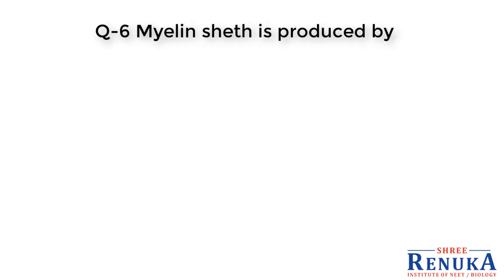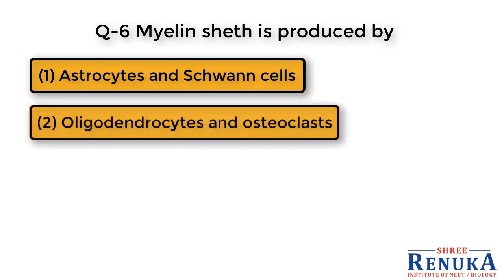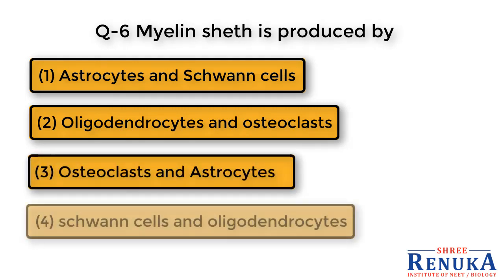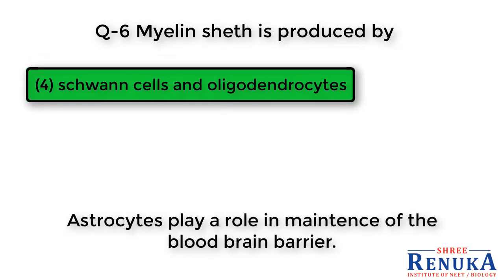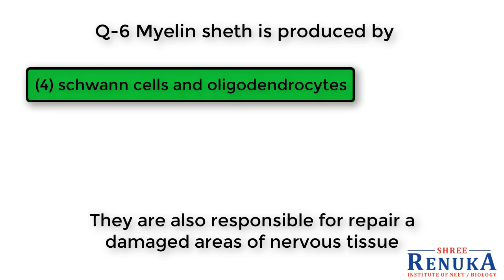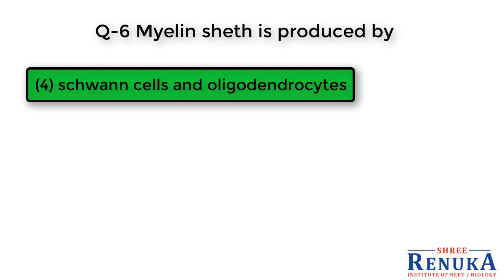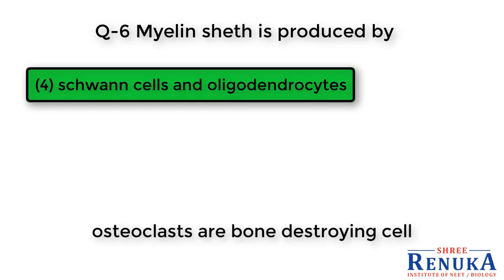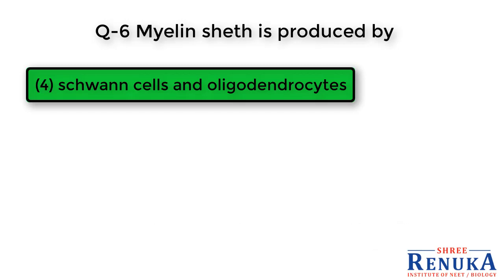Question 6: Myelin sheath is produced by — options: 1. Astrocytes and Schwann cells, 2. Oligodendrocytes and osteoclasts, 3. Osteoclasts and astrocytes, 4. Schwann cells and oligodendrocytes. The answer is 4, Schwann cells and oligodendrocytes. Astrocytes play a role in maintenance of the blood-brain barrier and repair of damaged nervous tissue, but are not part of myelin sheath. Osteoclasts are bone-destroying cells, also not part of myelin sheath. So myelin sheath is formed by Schwann cells and oligodendrocytes.